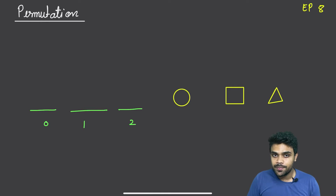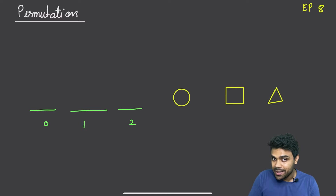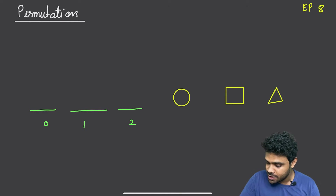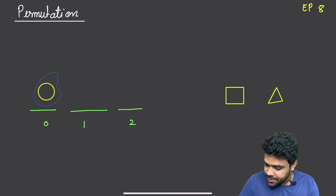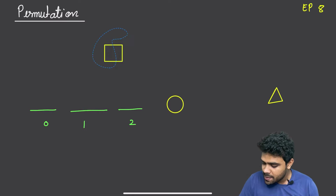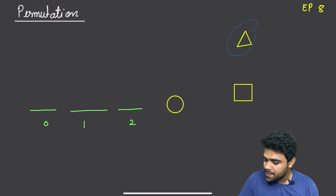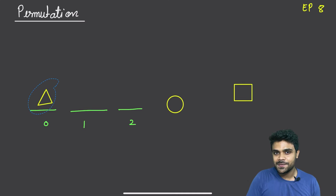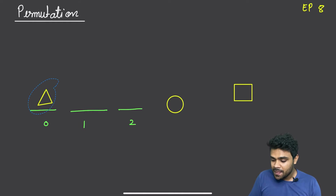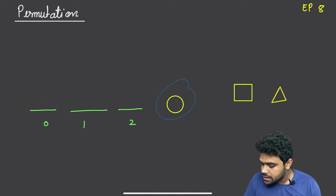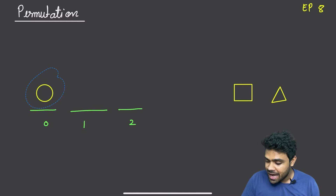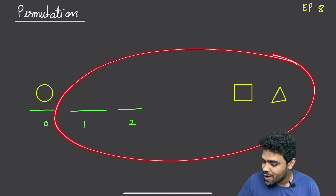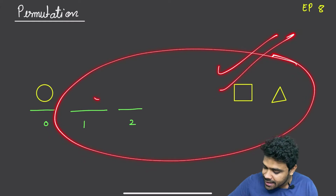Now let us try to solve this problem. We have three elements in three places. For the first position I have three possible options: keep a circle, keep a square, or keep a triangle. After selecting one of these options, I will ask recursion to do the remaining task — to arrange the remaining two elements in the remaining two positions.